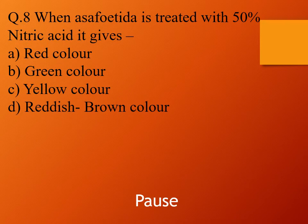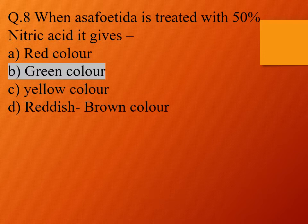Question 8. When asafoetida is treated with 50% nitric acid, it gives: option A, red color; option B, green color; option C, yellow color; and option D, reddish brown color. The right answer is option B, green color.